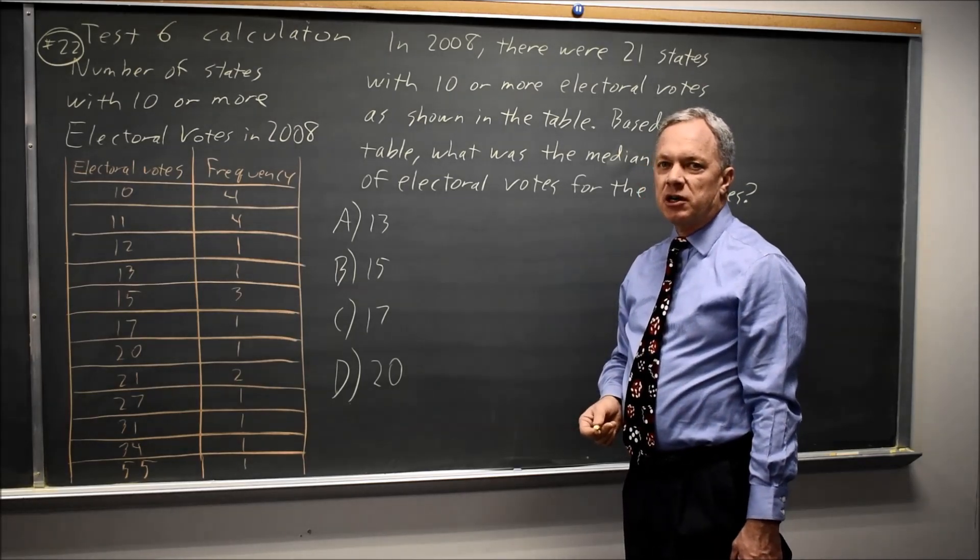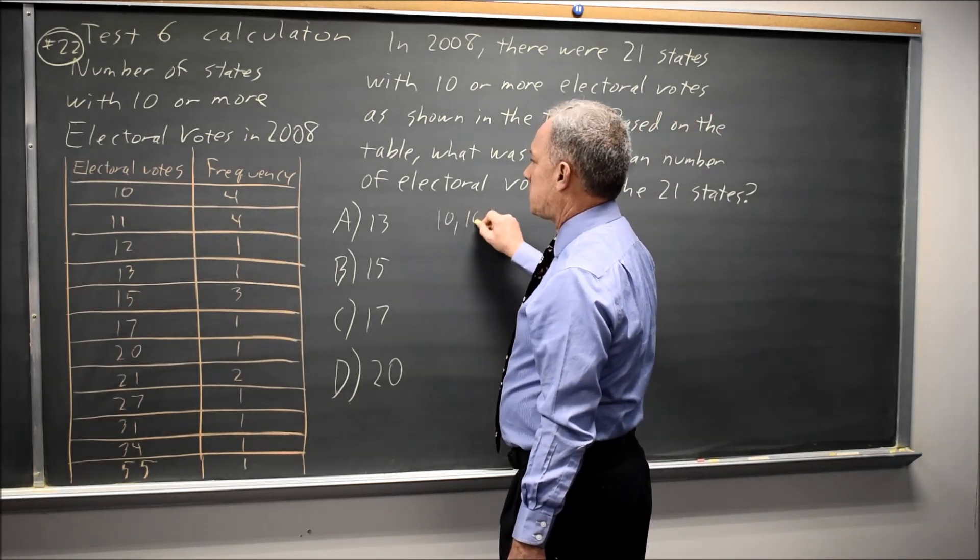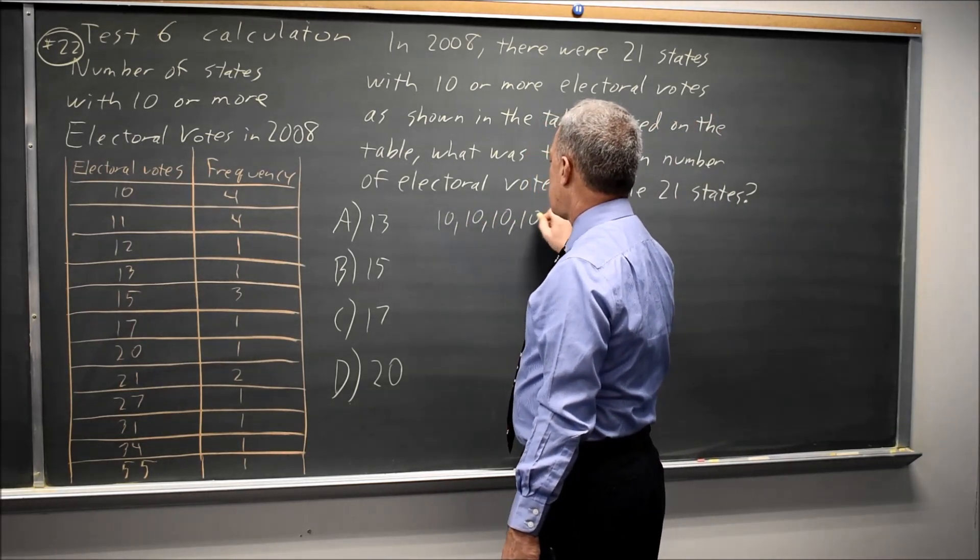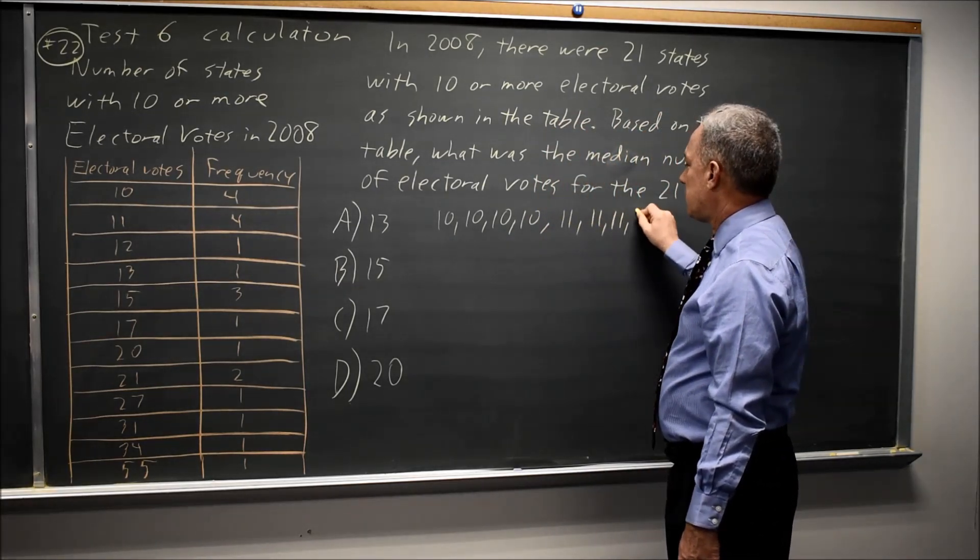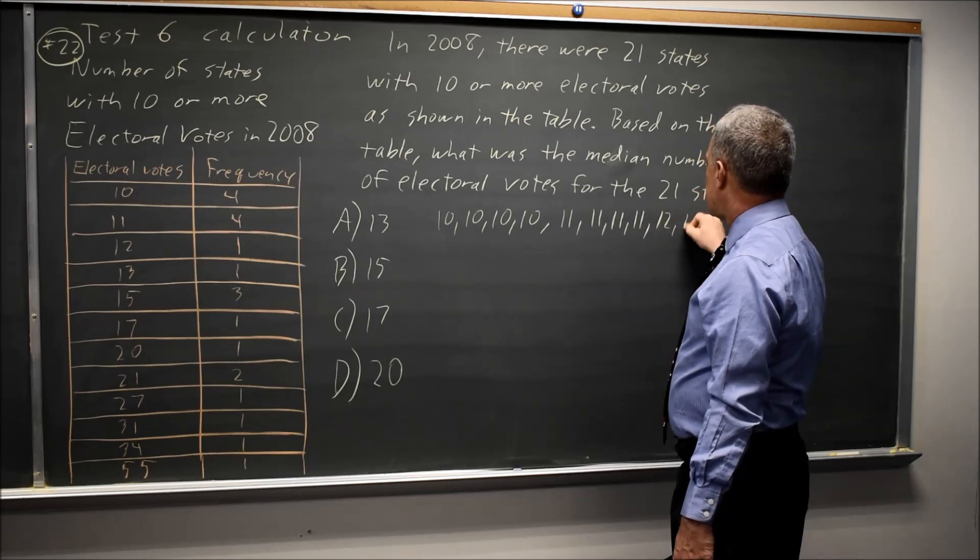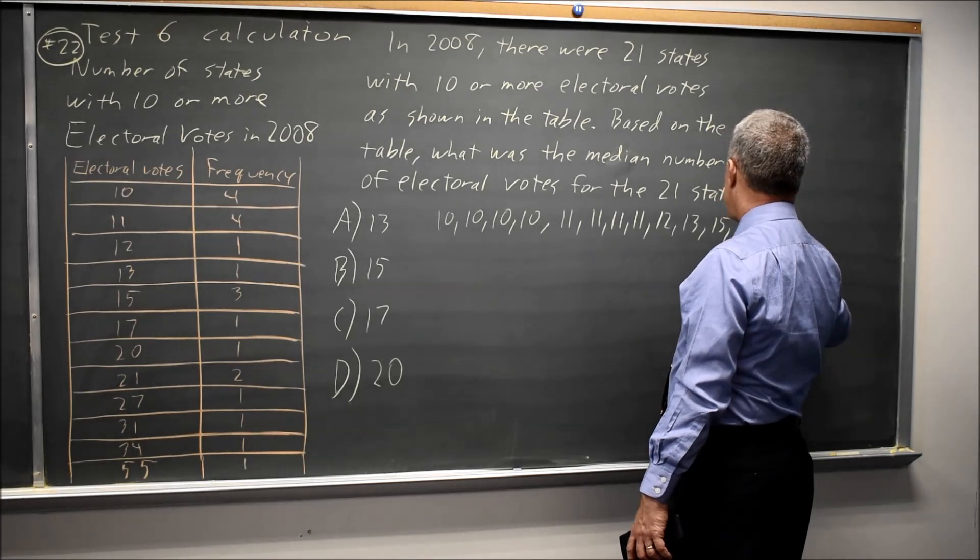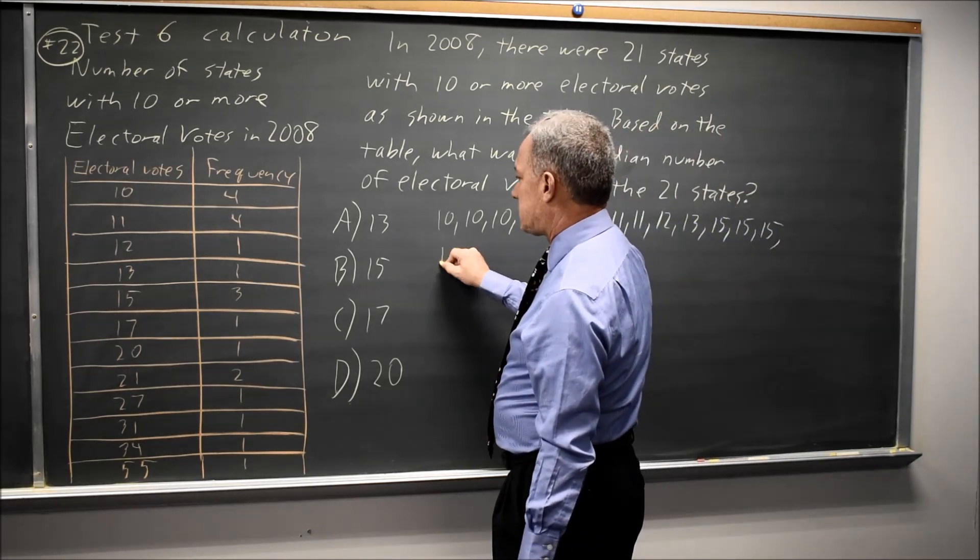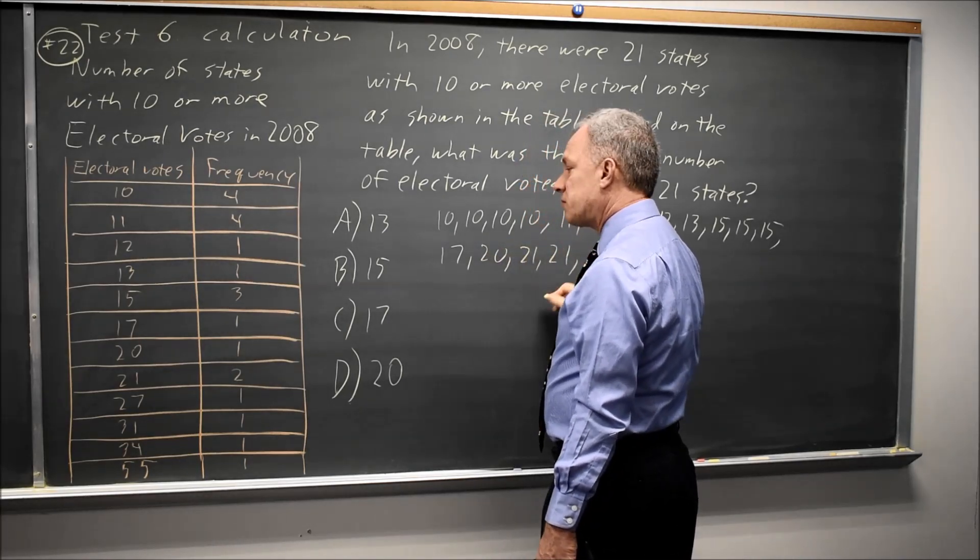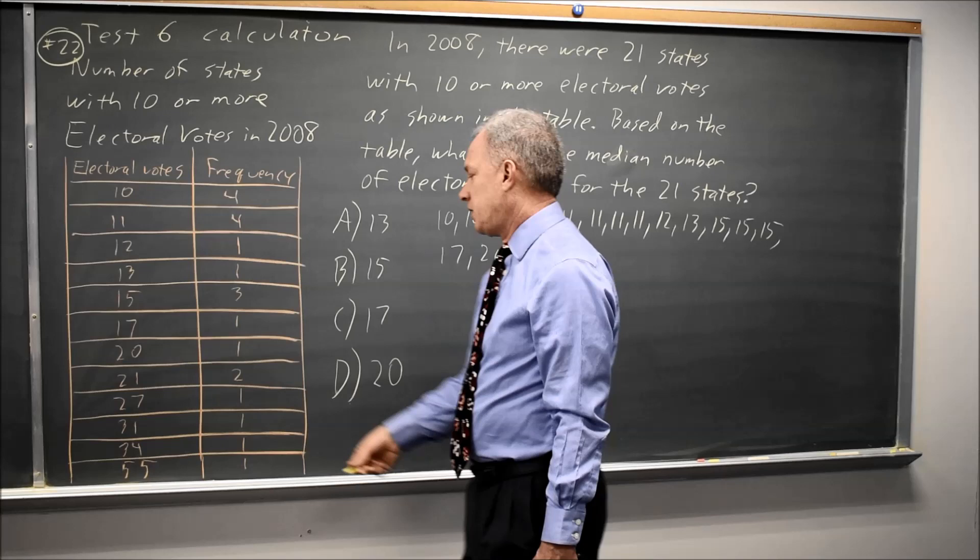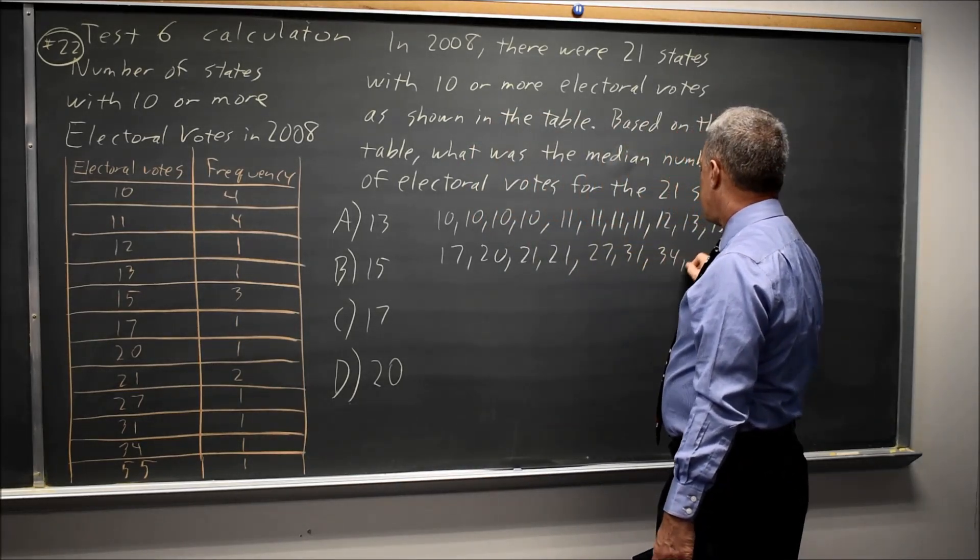To find the median, that's the middle number on a list of numbers, I could write them all out. 10, 10, 10, 10. This is about as large a list as I'd be willing to write. 11, 11, 11, 11, 12, 13, 15, 15, 15, and then 17, 20, 21. There's two 21, so I'll write another 21. That's the frequency here. 27, 31, 34, and 55.